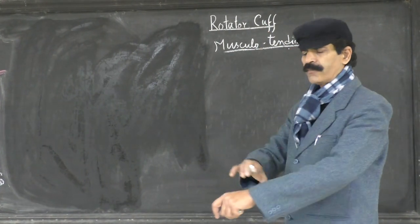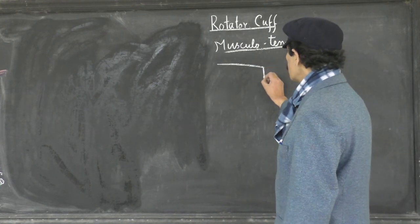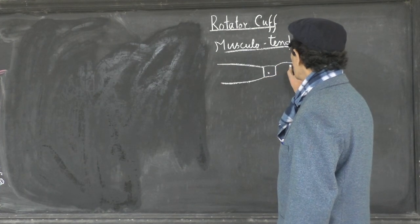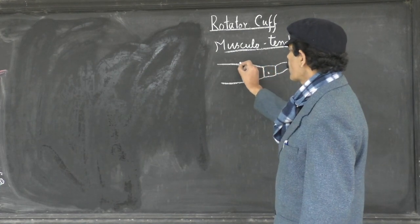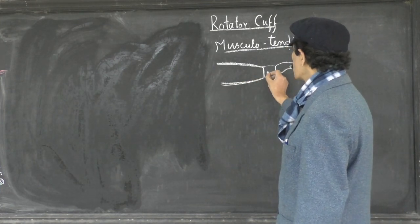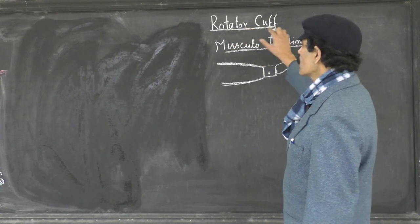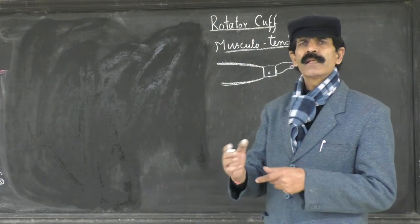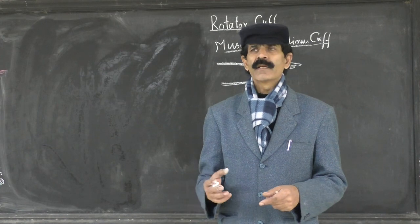The word 'Cuff' refers to the cuff of a shirt. As you know, when we wear a shirt it is very broad in the upper part, but when it comes near the wrist it becomes narrow — that narrow part is called the cuff. Similarly, the Rotator Cuff: 'Rotator' means the muscles which bring about the medial and lateral rotation of the humerus, and they act as the rotator cuff.